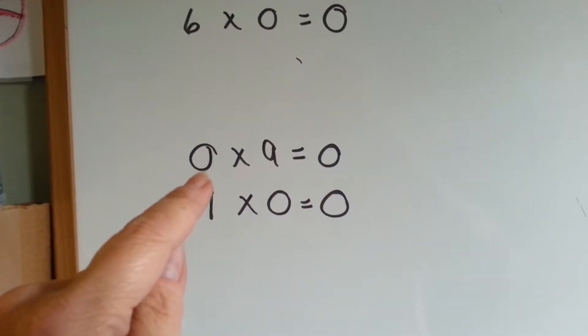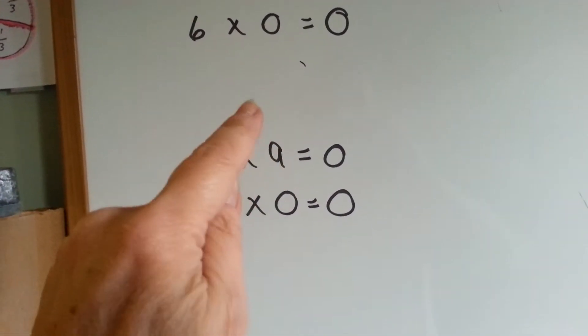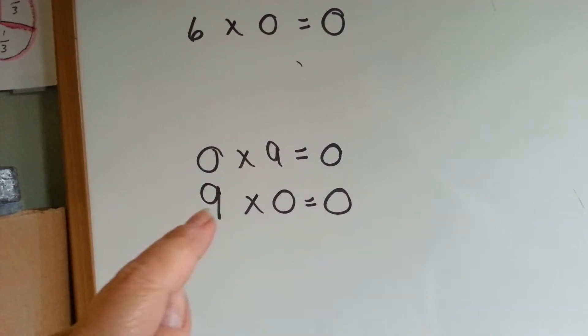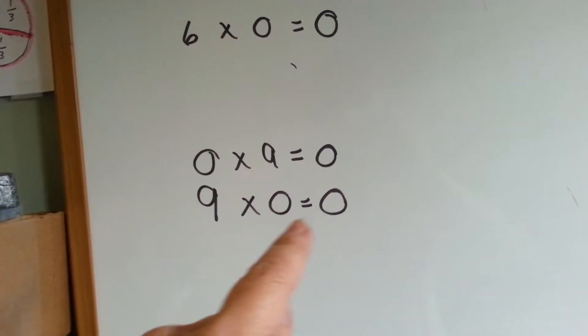If I have no 9's, 0 9's, I have 0. If I have 9 0's, I still have 0.